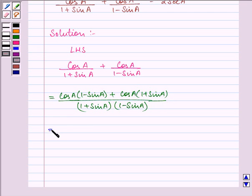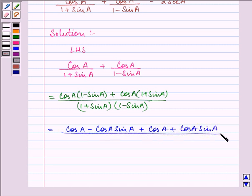Now in opening the brackets we have cos A minus cos A sin A plus cos A plus cos A sin A upon, using the identity A plus B A minus B, that is A square minus B square.